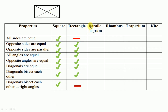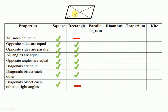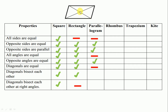Next, parallelogram. All sides are equal — no, all sides are not equal, so we put a dash. Opposite sides are equal — yes, opposite sides are equal. Opposite sides are parallel — it is a parallelogram, so opposite sides are parallel. All angles are equal — no, all angles are not equal. Opposite angles are equal — yes. Diagonals are equal — no, it is not equal. Diagonals are bisecting — yes, diagonals are bisecting. Diagonals bisect at right angle — no, so we put a dash.